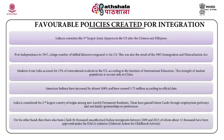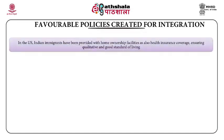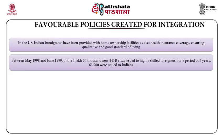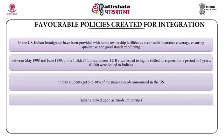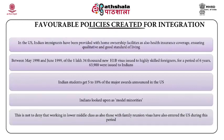There have also been 284,000 unauthorised Indian immigrants between 2009 and 2013, of whom about 11,000 have been approved under the DACA — Deferred Action for Childhood Arrivals — initiative. In the US, Indian immigrants have been provided with home ownership facilities and health insurance coverage, ensuring a good standard of living. Between May 1998 and June 1999, of the 134,000 new H-1B visas issued to highly skilled foreigners for a period of six years, 63,900 were issued to Indians. Indian students are known to get 5–10% of the major awards announced in the US. Indians are thus looked upon as model minorities, making the US an attractive destination.